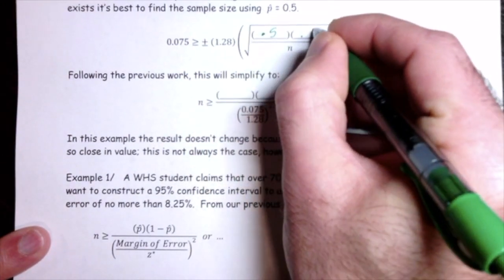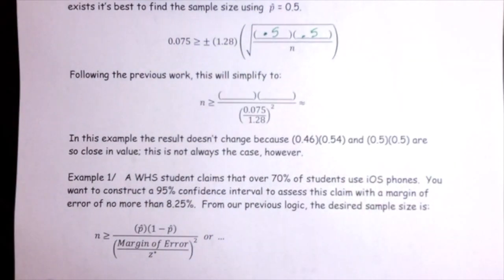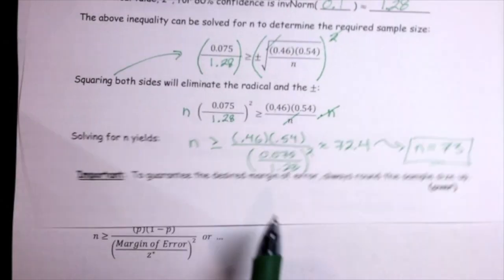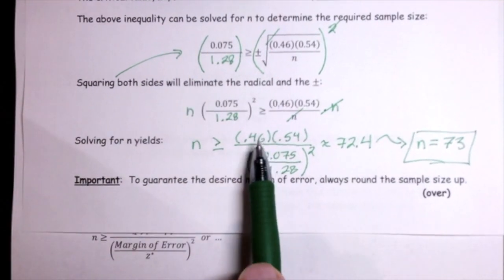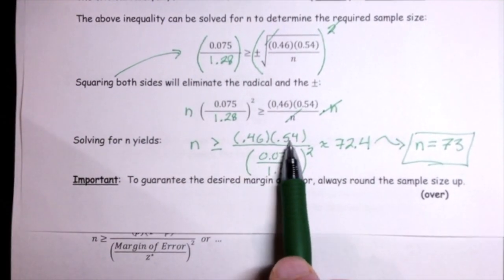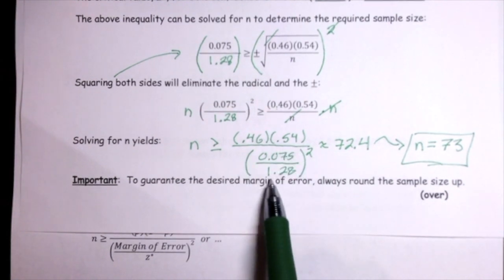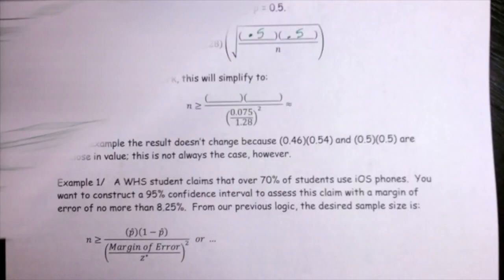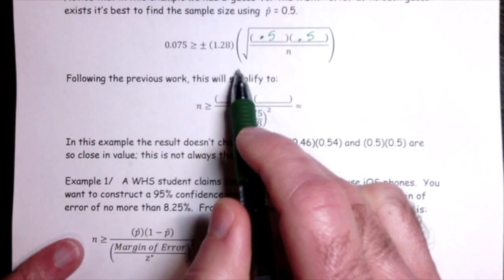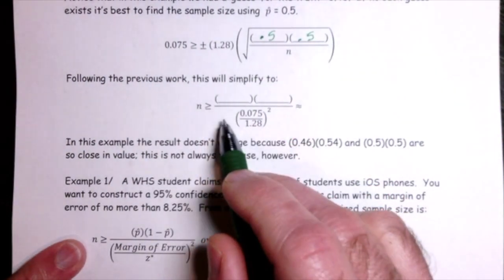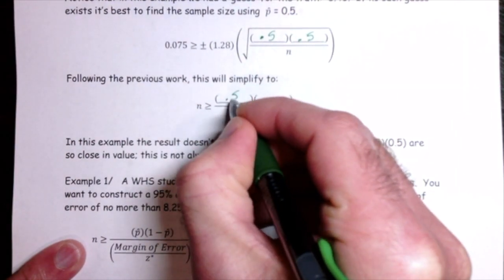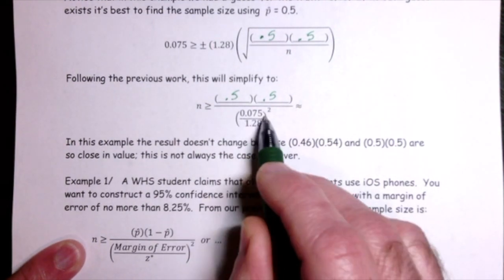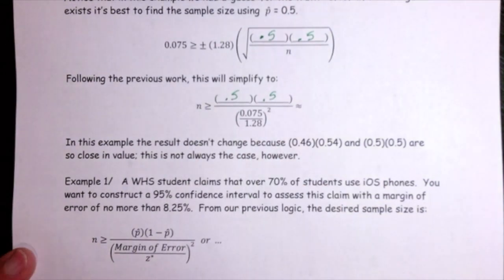Rather than going through all the algebra again, here's the basic strategy: numerator is your guess for the truth times (1 minus that guess), and the denominator is the desired margin of error divided by the critical value, squared. Using 0.5 × 0.5 in the numerator, with the desired margin of error over the critical value squared in the denominator, gives the desired sample size.